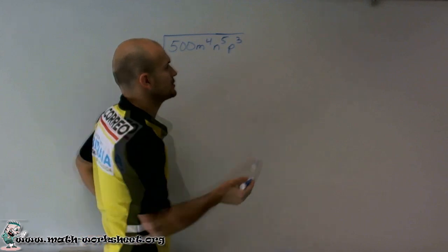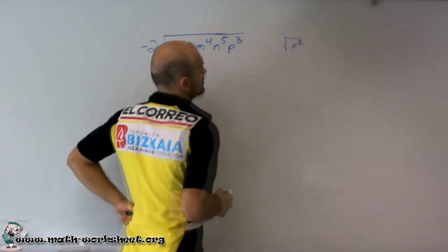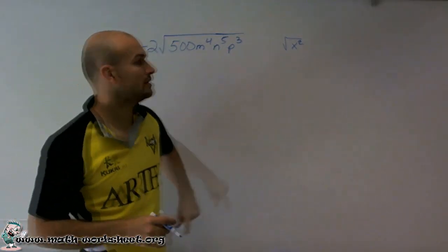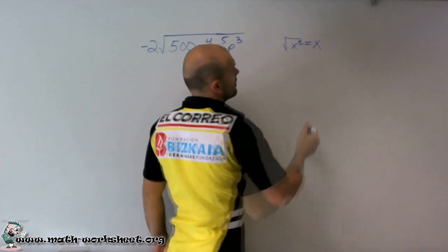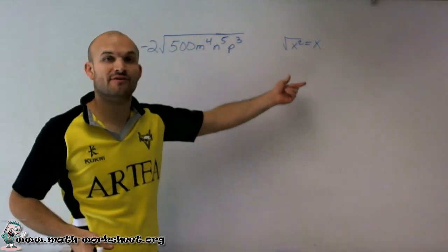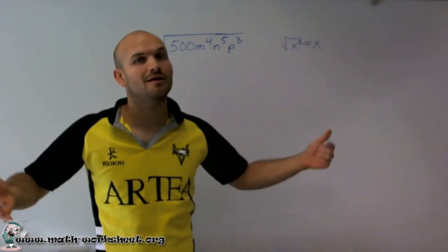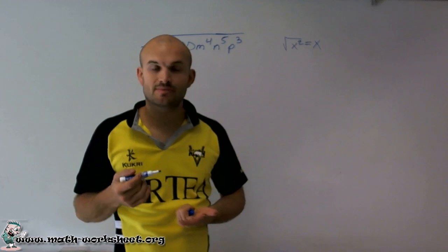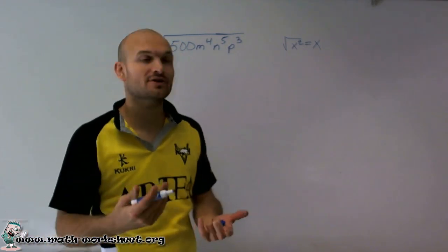One thing I want to go through and speak with you about is at least understanding the square root of a square number. The square root of a square number is just going to equal that number. So there's special types of numbers. Here I'm dealing with the variable, but there's special types of numbers that we can take the square root of, which we call our square numbers. Those numbers are like 4, 9, 16, 25, 36.